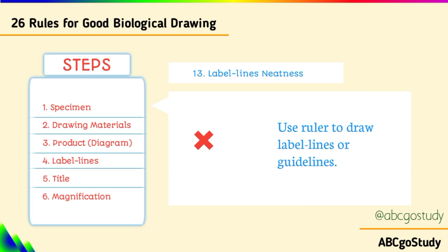You should not draw label lines freehand. There is no way you will draw with your hand and the examiner will not know, even if you think you can draw a straight line. You need a ruler to rule the diagram so it will be straight. Examiners are experienced and will know you have not used a ruler.